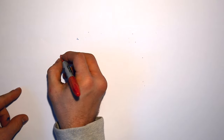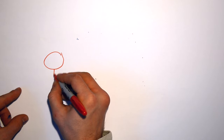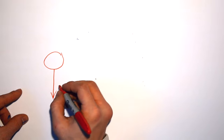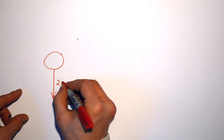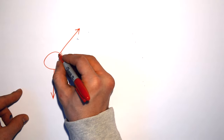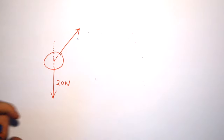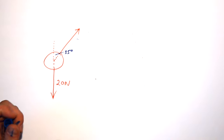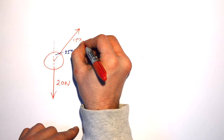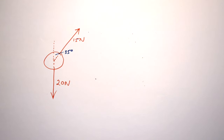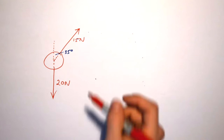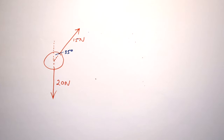What if we have another object with one force pulling down at 20 Newtons, and another force pulling up at an angle of 35 degrees to the vertical at 15 Newtons? To find the third force needed to keep this system in equilibrium, I first need to find the resultant of these two forces. The problem is they're not at right angles to each other, so I need to find two perpendicular components in order to do that.